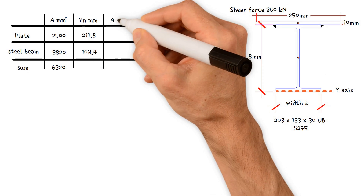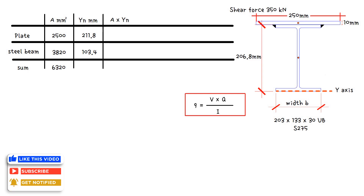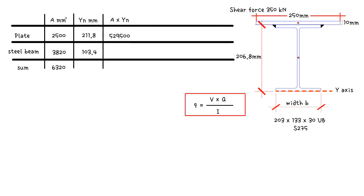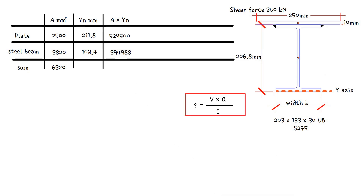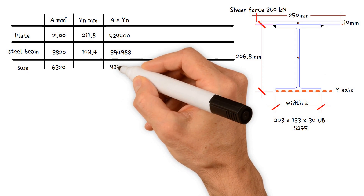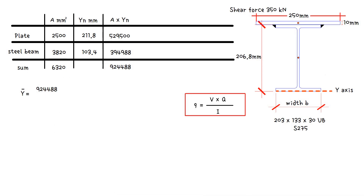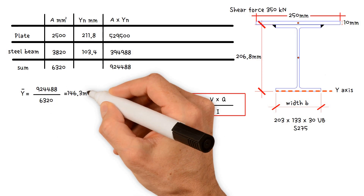The following column is area multiplied by Yn. For the plate: 2,500 × 211.8 mm = 529,500 mm³. For the steel beam: 3,820 × 103.4 mm = 394,988 mm³. When we add these up, we get a total of 924,488 mm³. Therefore, the location of the neutral axis, Y-bar, equals 924,488 divided by the total area 6,320, which gives us a value of 146.3 mm.